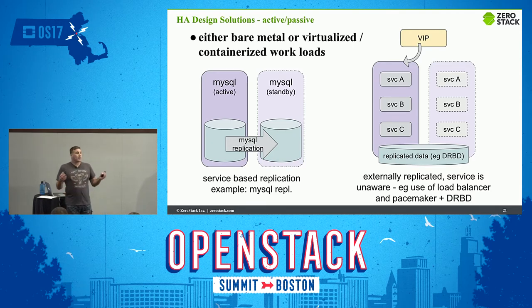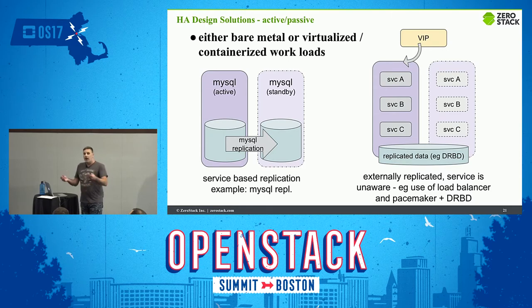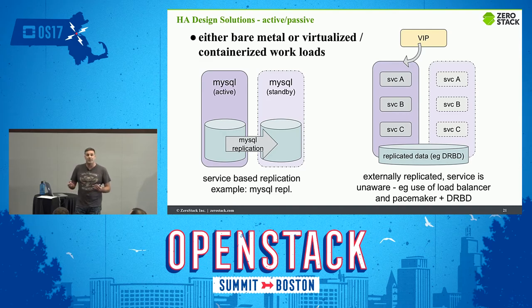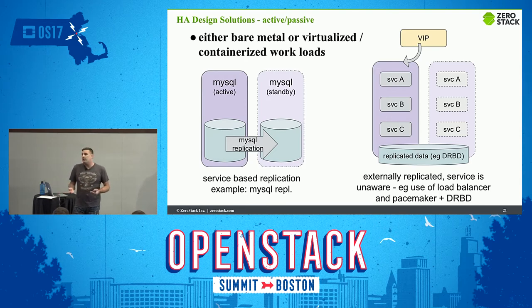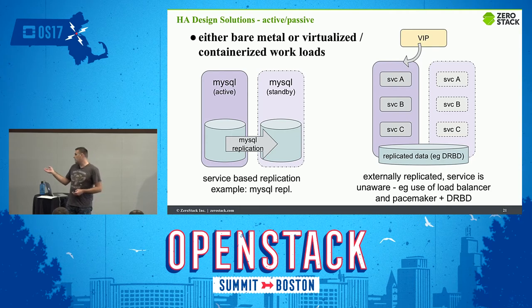If you want to scale up a little and want more peace of mind, an active-passive system is a good option. In an active-passive system, one solution is active at a time while another — what I call a shadow service — is running and ready to take over. There are two main patterns: either the application is capable of replicating its own data and state, or you rely on external mechanisms. MySQL is an example of active-passive replication built into the service itself, and I encourage using those in-built replication capabilities as they're designed to handle data recovery most effectively.